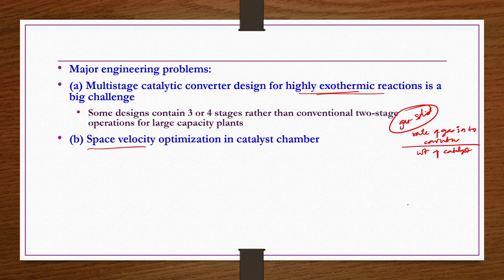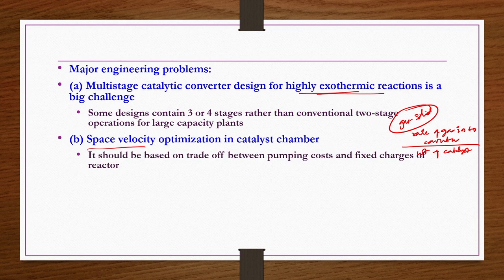Space velocity optimization in the catalyst chamber is also important. Space velocity is defined as the rate of gas into the converter divided by the weight of catalyst — it has units of inverse time. This parameter is critical in gas-solid reactions in packed beds or fluidized beds. Higher space velocity increases pumping costs; lower space velocity also affects performance. There must be a trade-off between pumping cost and fixed reactor charges.